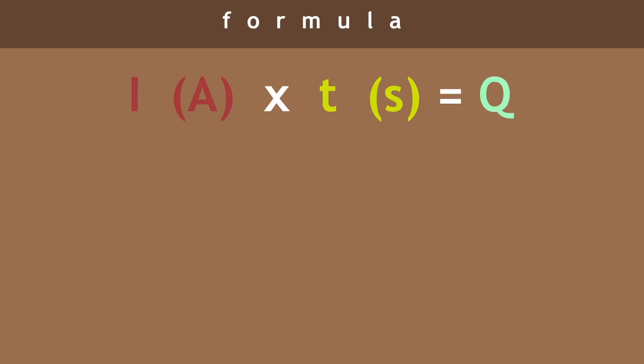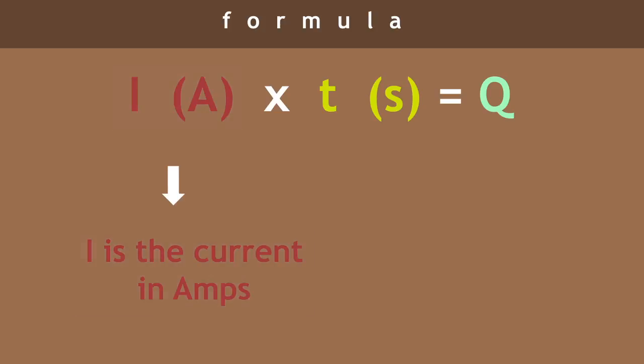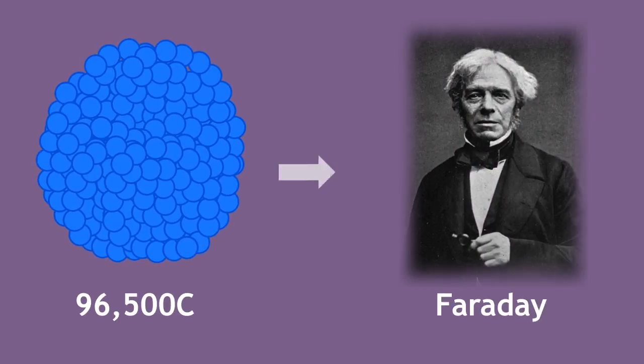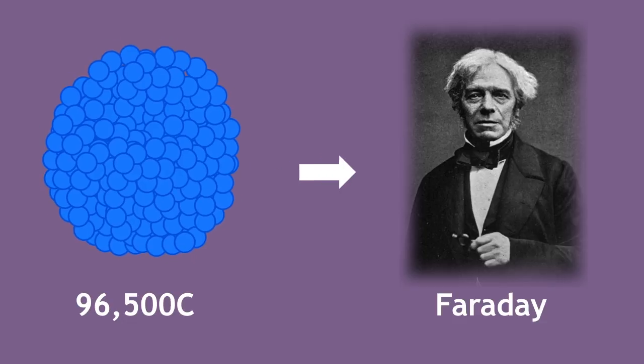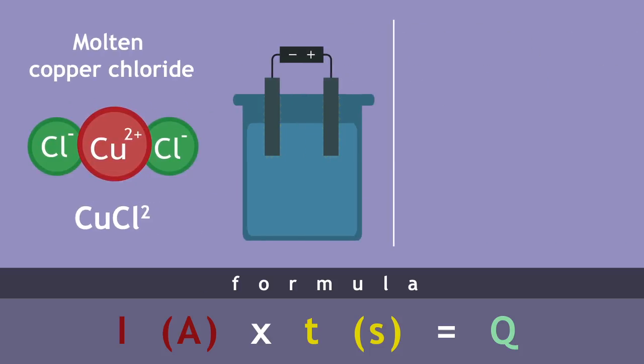This involves the use of this formula, where Q is charge, or number of electrons in coulombs, I is the current in amps, and T is the time in seconds. One mole of electrons has a charge of 96,500 coulombs, also known as a Faraday. Let's say that the molten copper chloride is electrolyzed using the current of 2 amps for 1 hour.